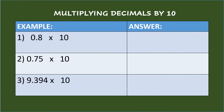Multiplying decimals by 10. Example 1: 8 tenths times 10. Since the multiplier 10 has only one zero, move the decimal point in the multiplicand one place to the right and put the decimal point after 8. So the answer is 8. Since 8 is a whole number, you may omit the zero before the number as it has no value.